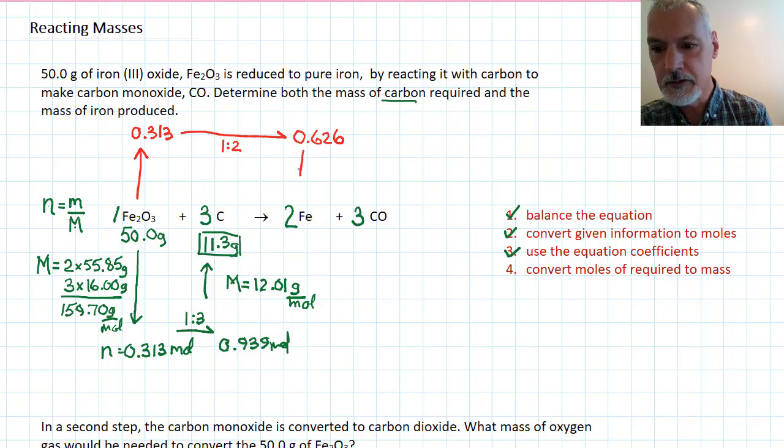And now, I want to convert those moles back into grams. Now, all I need is what the molar mass is of iron. And again, from the periodic table, we saw 55.85 grams per mole. To find the mass, I multiply these two together, just as I did before, and that's going to take me to 35 grams.